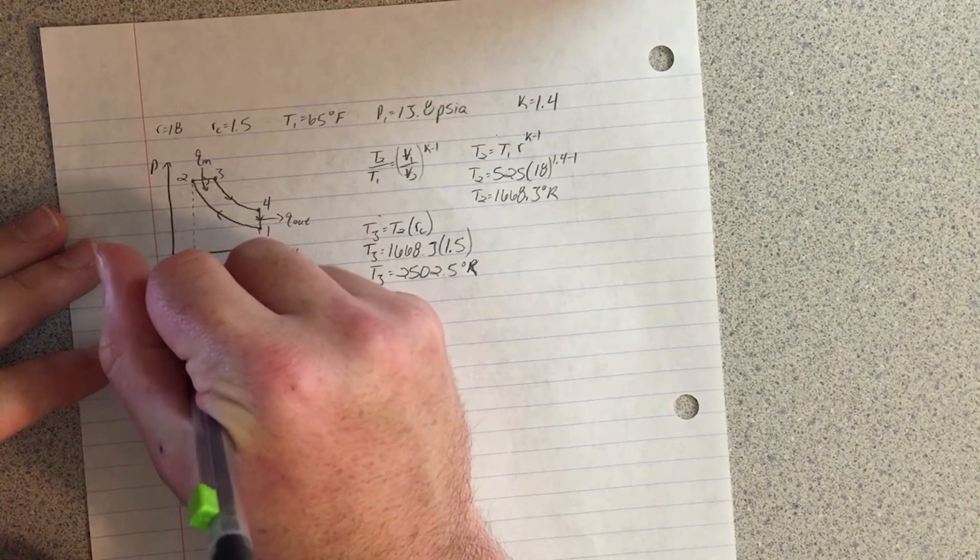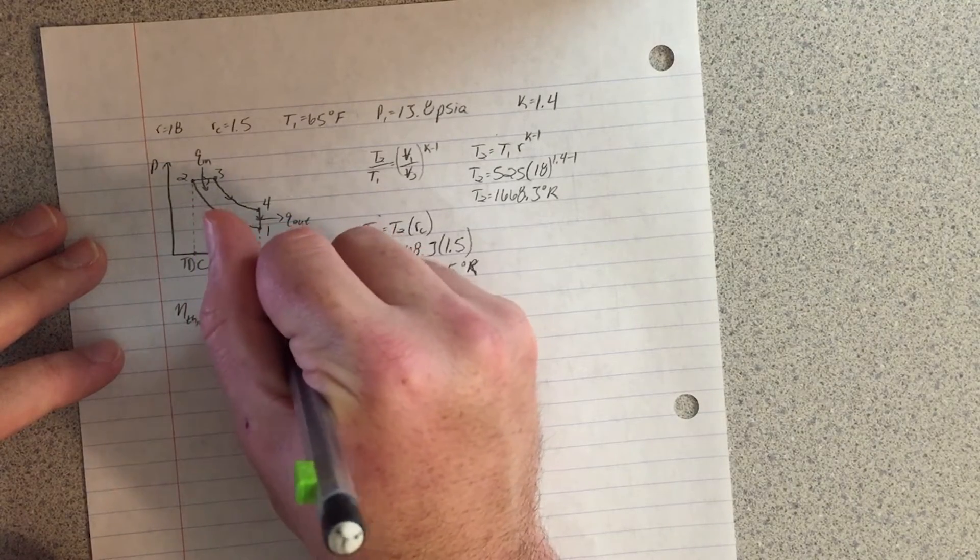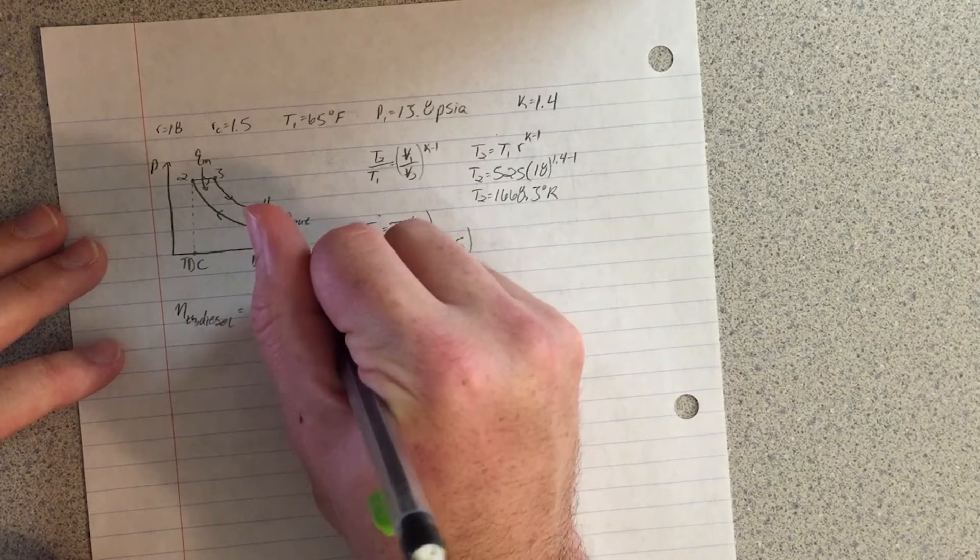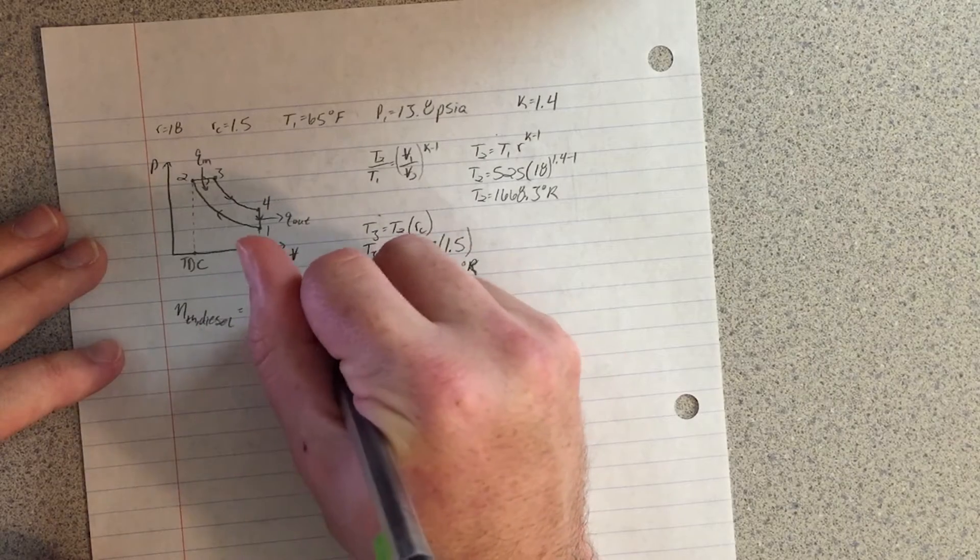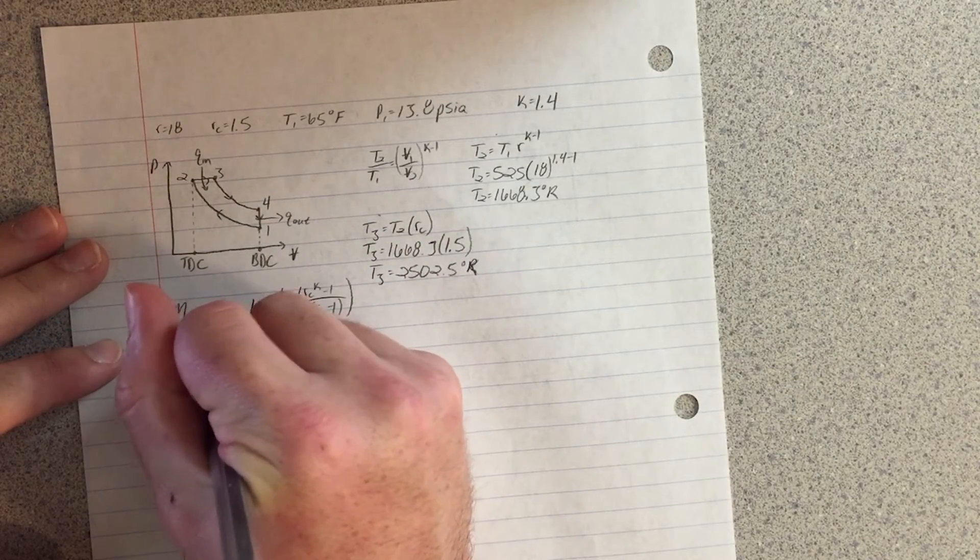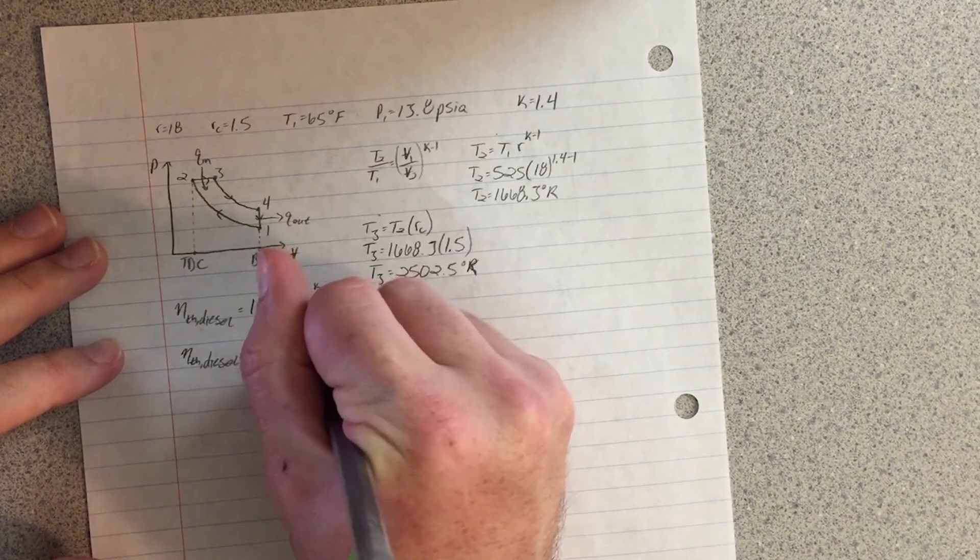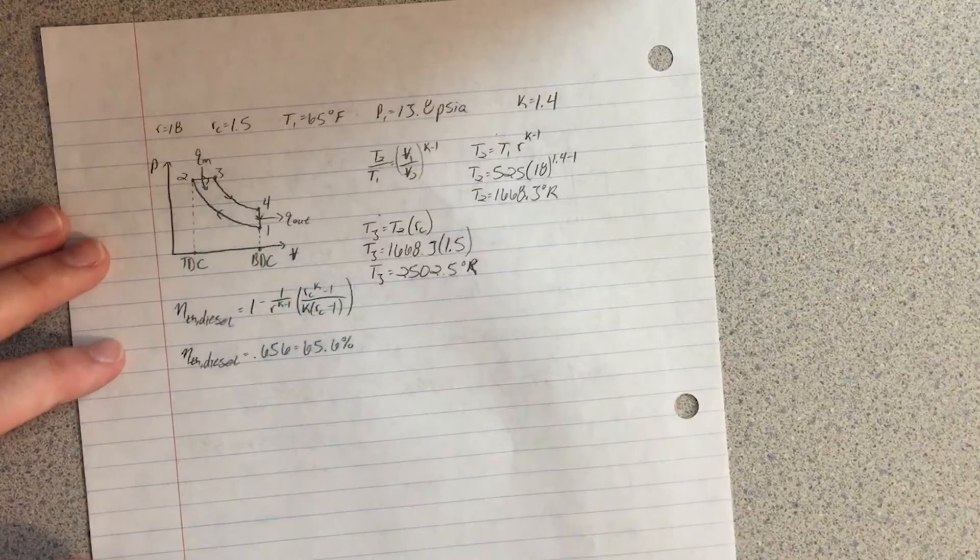To calculate the rate of heat addition, the thermal efficiency of the diesel engine must be found using the equation Eta TH diesel equals 1 minus 1 over R to the K minus 1 times RC to the K minus 1 divided by K times RC minus 1.